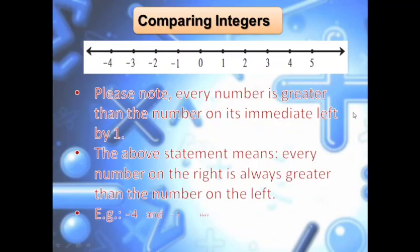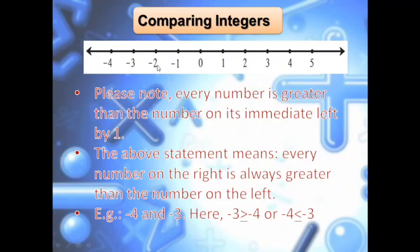Please note: every number is greater than the number on its immediate left by 1. For example, 0 is greater than minus 1 because minus 1 is to the left. Minus 1 is greater than minus 2. Minus 2 is greater than minus 3. The above statement means every number on the right is always greater than the number on the left. So for minus 4 and minus 3: minus 4 is lying to the left of the number line, so minus 3 is the bigger number and minus 4 is the smaller number.